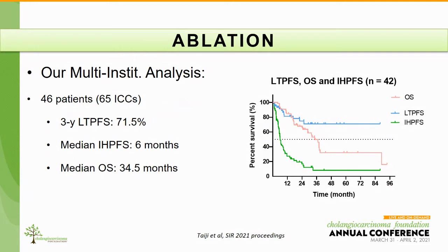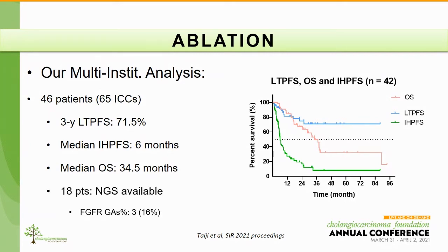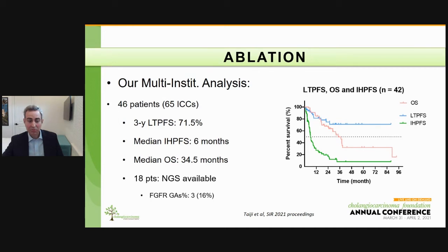Our most institutional analysis combined MD Anderson ablation data with two institutions in Italy: 46 patients who underwent 65 ablations of 65 cholangiocarcinomas. Our three-year local tumor progression-free survival — meaning local recurrence-free survival — was 71.5 percent. Median intrahepatic progression-free survival was six months, with most patients recurring with new tumors in the liver rather than at treated sites. Median overall survival was 34.5 months. Next-generation sequencing was available for 18 of the 46 patients; FGFR alterations were present in about 16 percent, consistent with reported rates around 25 percent given the small cohort.